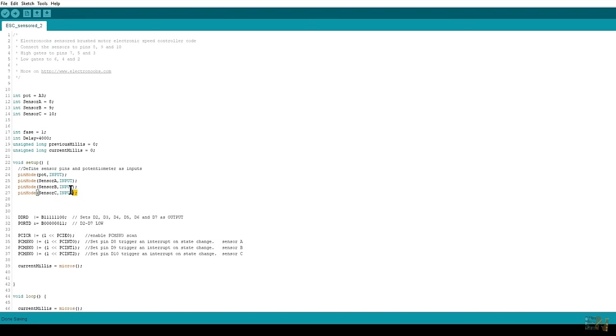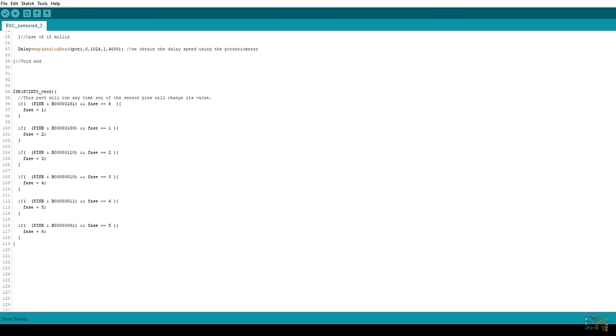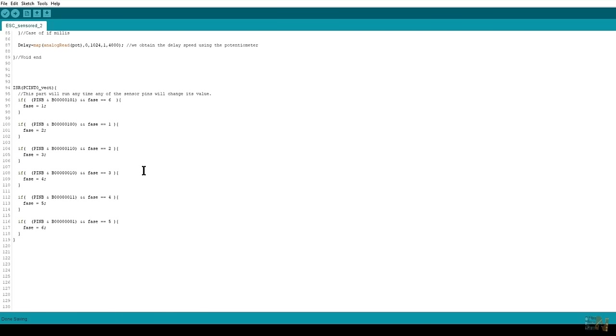I define the sensor pins as inputs. Next, with these registers, I configure pins 8, 9 and 10 to create interrupts. So each time one of these pins changes its state, we will go to the interrupt vector. Here we detect the sequence and decide the phase of the rotation, depending on the state of the hall sensors. If we have a 101, we switch to the first step. If we have a 001, to the second step, and so on as in the table before with a total of 6 steps. Easy right?